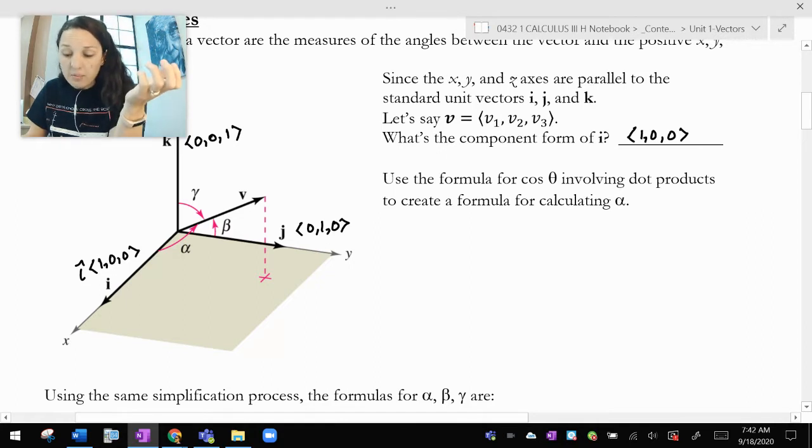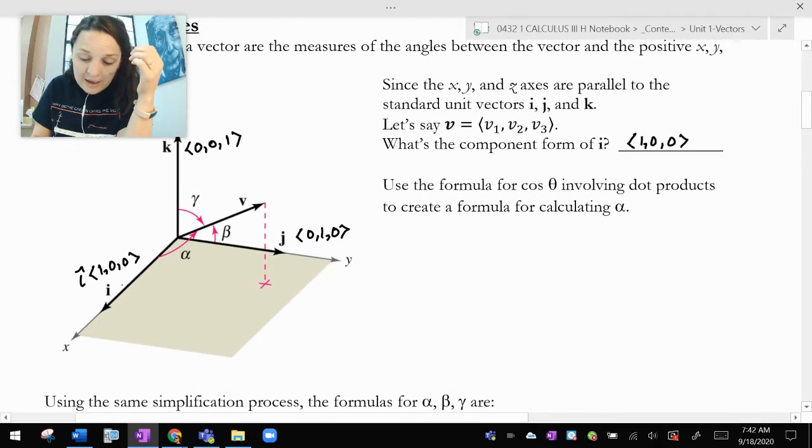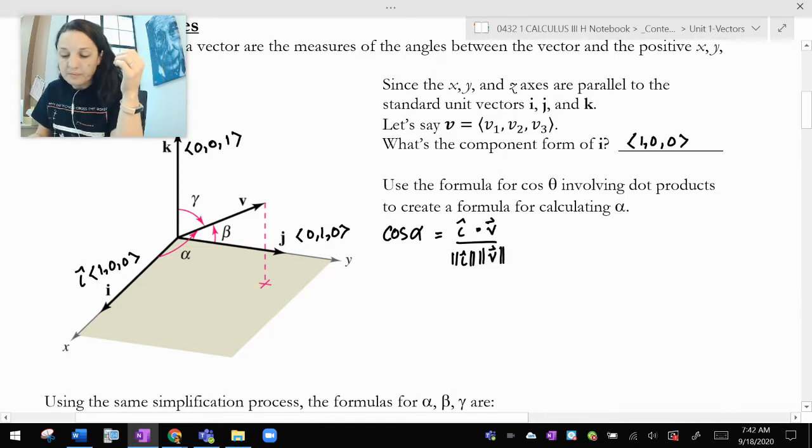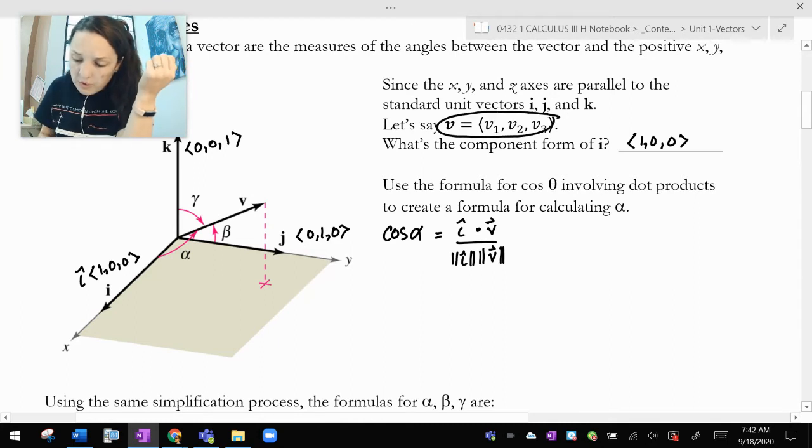So over here, it says, what is the component form of i? We already wrote that down. That's (1, 0, 0). And it says, use the formula for cos θ involving dot products to create a formula for calculating alpha. So if I want to calculate the angle between i and v, then cosine alpha is going to be i dot v over the magnitude of i times the magnitude of v. And then I'm just going to call vector v as v1, v2, v3. So that's going to be (1, 0, 0) dotted with (v1, v2, v3).